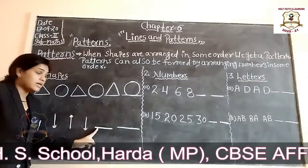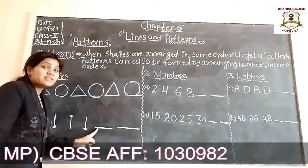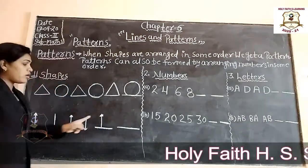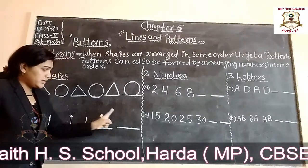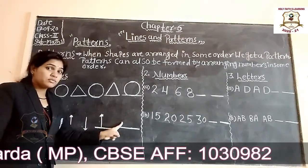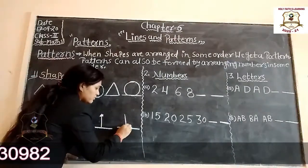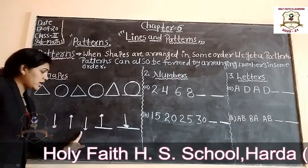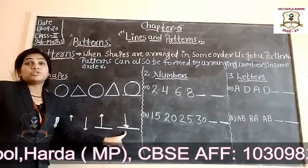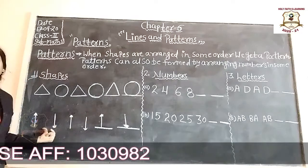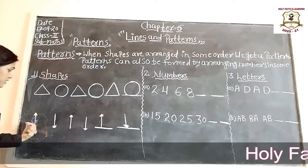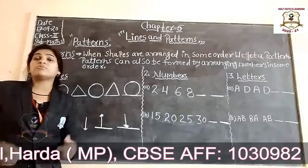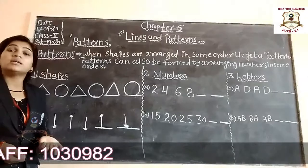So what comes next? Tell me students. Yes — up arrow. So what comes next after that? Up arrow. Then next — what comes next? Yes, down arrow. So it's given as a pair: up arrow, down arrow. Even this sequence forms a pattern, meaning each sequence has been arranged in a repeated order.